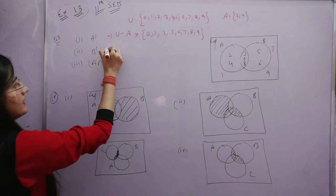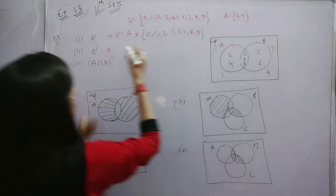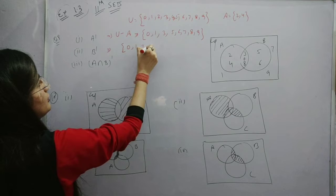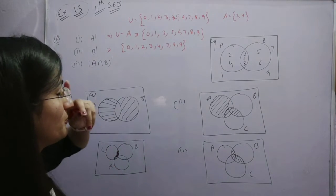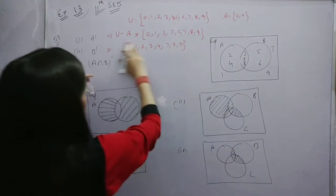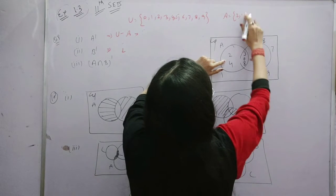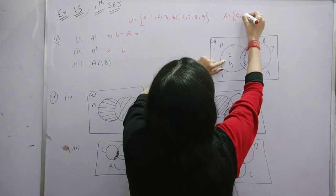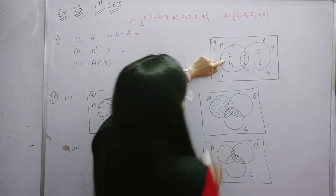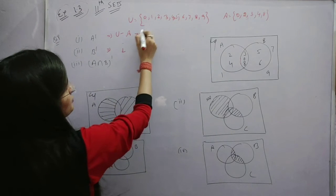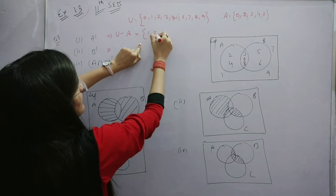What is A complement? The fifth part is A complement. The second part is B complement. A complement is {0, 1, 2, 3, 4, 7, 8, 9}. Then A minus B: {2, 4}. Then {0, 2, 3, 4, 8}. U minus A is {0, 1, 2, 3, 4, 5, 6, 7, 8, 9}.